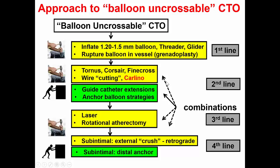If that doesn't work, one can try different microcatheters or the Carlino technique in association with a technique to increase the support of the guide catheter. The third step is to do laser or, if we can change the wire, rotational atherectomy. And the last step is sub-intimal techniques.